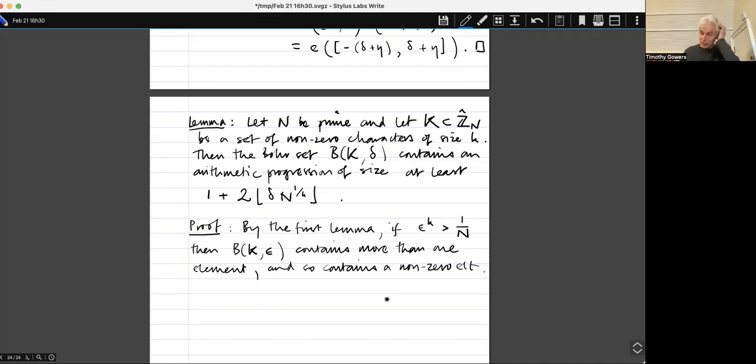But we can say slightly more than that. Because, um, if that's true for all, so that's equivalent to saying epsilon greater than one over n to the one over k. If that's true for all epsilons are strictly greater than N to the minus one over k, then it's also going to be true when epsilon actually equals N to the minus one over k.